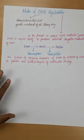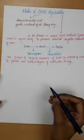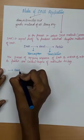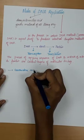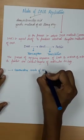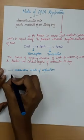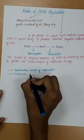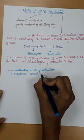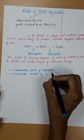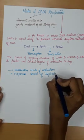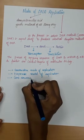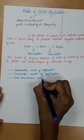There are several hypotheses to explain the mode of replication. They are: first, conservative mode of replication; second, dispersive mode of replication; and third, semi-conservative mode of replication.